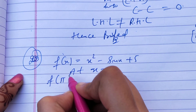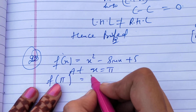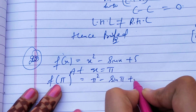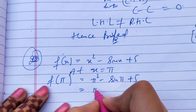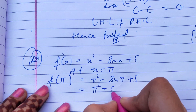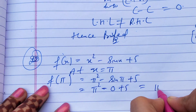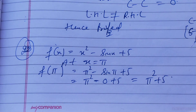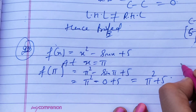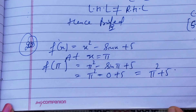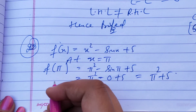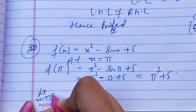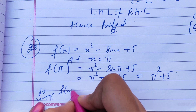First, let's find the function value at x equals pi: f(pi) equals pi squared minus sin pi plus 5. Since sin pi equals 0, this gives pi squared plus 5. Remember, sin pi equals 0, so the function value is pi squared plus 5.